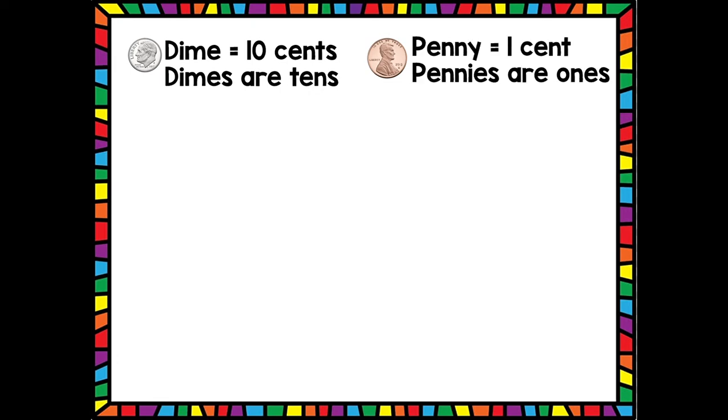Now let's talk about pennies and dimes. This is what a dime looks like: it's the smallest coin and it is silver. Dimes are worth ten cents, so we're going to use dimes to represent our tens. Here's what a penny looks like: it is the copper looking coin, it's a little bit bigger than the dime, but it's only worth one cent. So pennies are going to be our ones. So let's solve a problem using pennies and dimes.